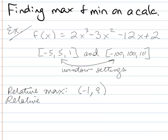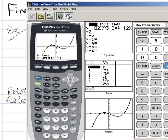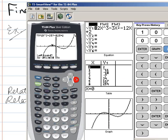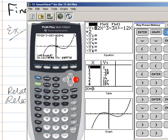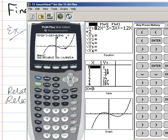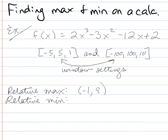And my relative min, I can find just exactly the same way. Except I'm going to use the other function. So I'm going to get second calc. And I'm going to find the minimum. So I'm going to start over here on the left side of it. Start right over here. Enter. Go over to the other side. And hit enter. So now I'm looking in between these two arrows for the minimum point. Do I want to guess? Yes. And it gives me 2, negative 18. So 2, negative 18.